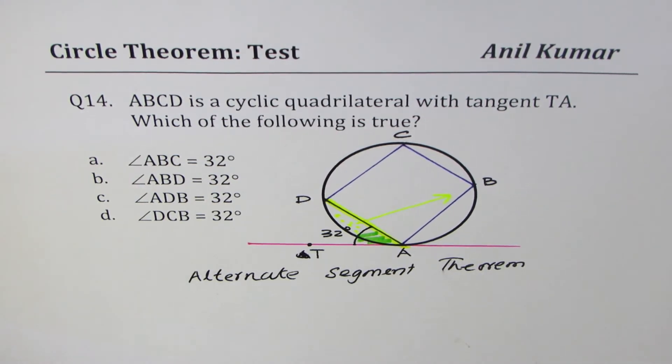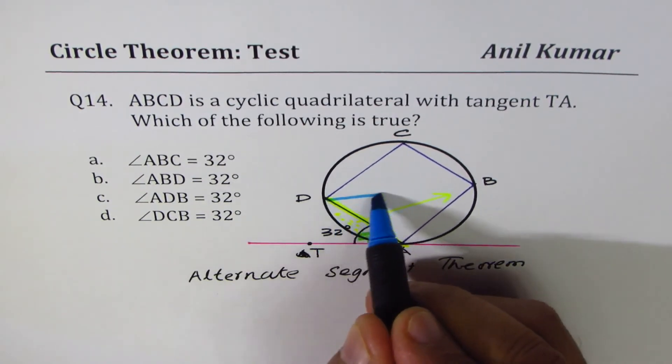we should always form a triangle. That is very important. So construct by joining D and B.